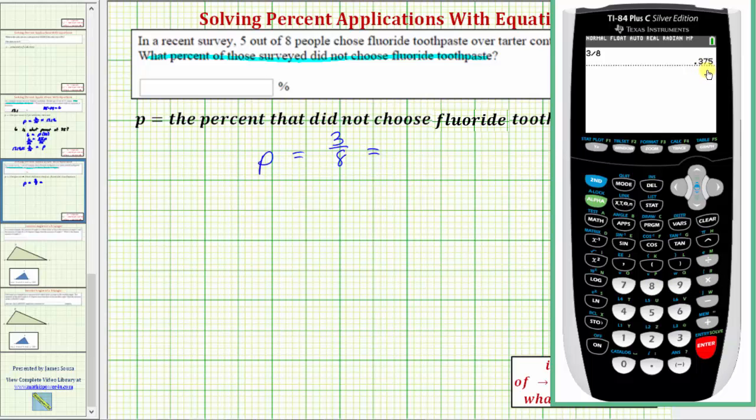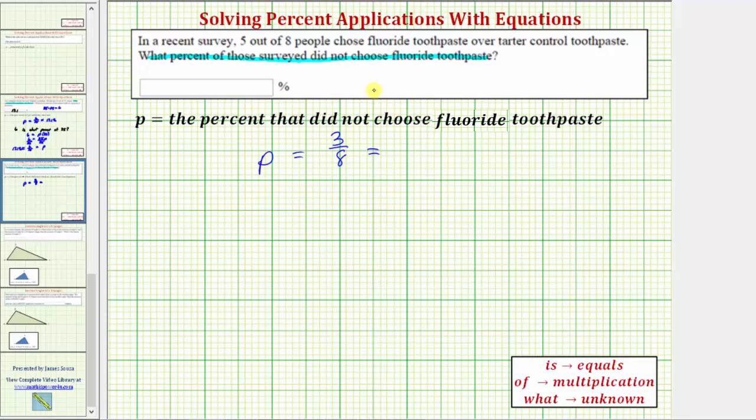And to convert the decimal to a percentage, we multiply by one hundred and add a percent sign. So times one hundred, enter, which gives us thirty-seven point five percent. So three-eighths equals zero point three seven five as a decimal, which equals thirty-seven point five percent.